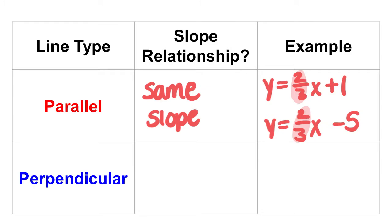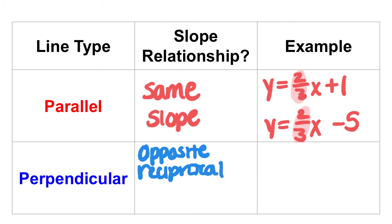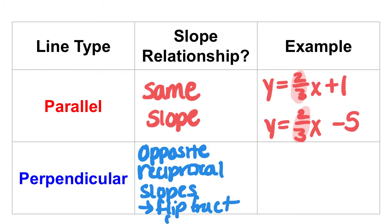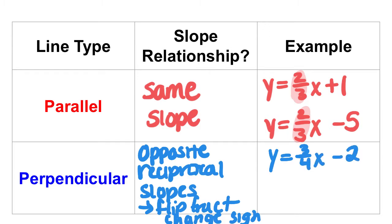However, perpendicular lines have opposite reciprocal slopes, which essentially means you flip the fraction and change the sign. So for example, if I have y equals negative 4 thirds x plus 1, this would be an example of perpendicular slopes because the negative 3 over 4 flips and changes signs to become negative 4 over 3.